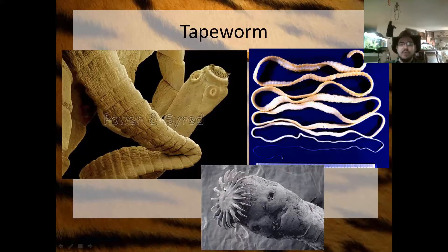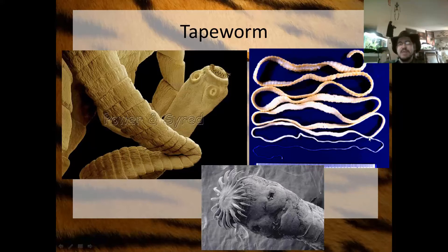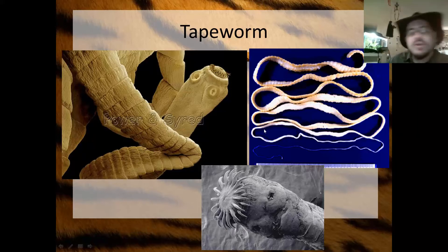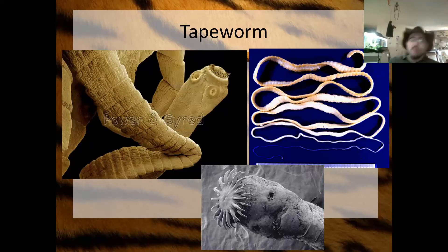Then there's the tapeworm. Here is a pork tapeworm — this little bit is the head, and all the other segments are those individual egg packets that make thousands upon thousands of eggs. Tapeworms can get very, very long — you have 20 feet of intestines and your tapeworm can be much more than 20 feet long.